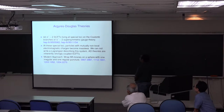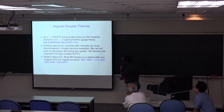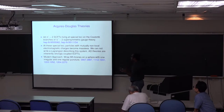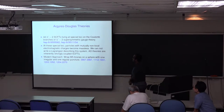A more modern approach to constructing these Argyres-Douglas theories was invented in these papers, where they considered wrapping M5 branes on a sphere with one irregular and one regular puncture. By irregular and regular puncture, I mean that you can think of a Hitchin field living on this sphere, and then the boundary conditions are set such that it has a simple pole at the regular puncture and higher order poles at the irregular puncture.